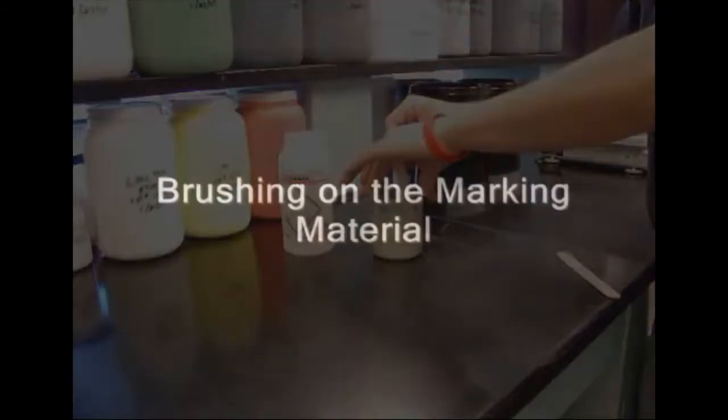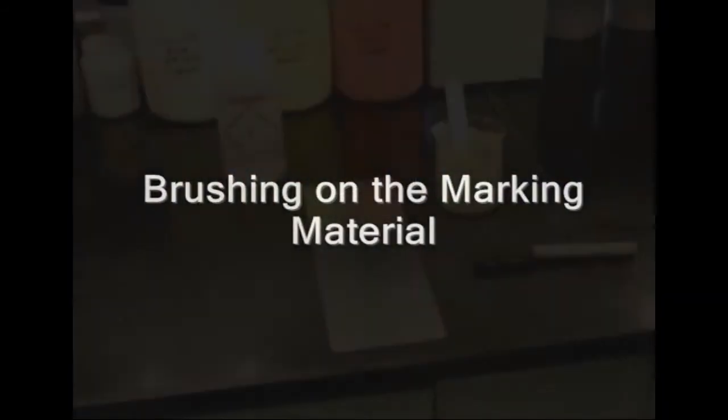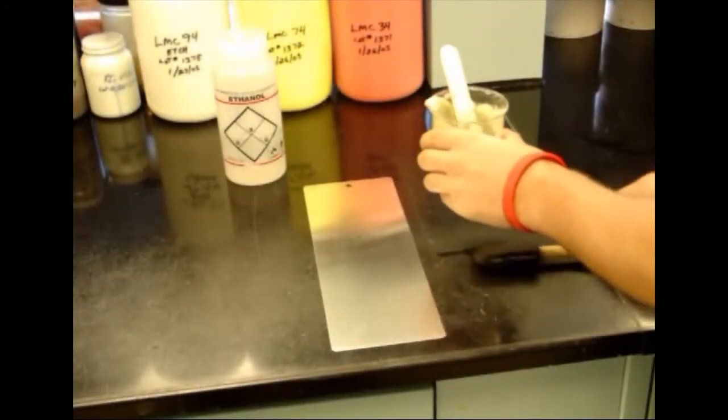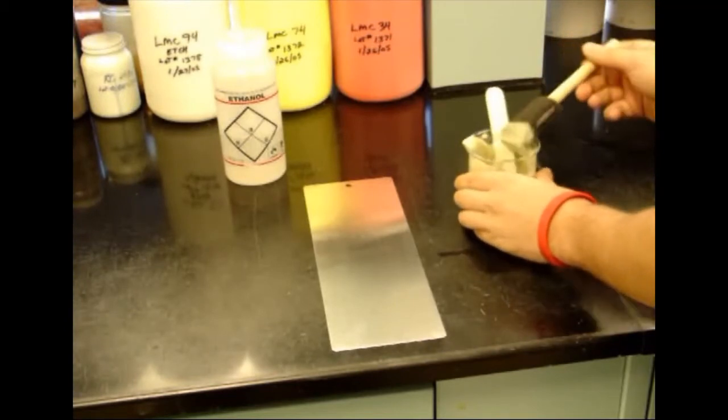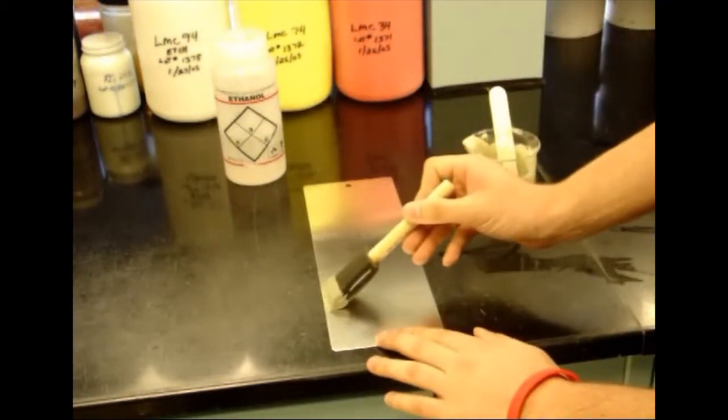The LMM6000 can be applied by brushing it onto the substrate. A foam brush should be used to eliminate brush marks caused by bristles. Apply a thin, even layer in consistent, smooth strokes.